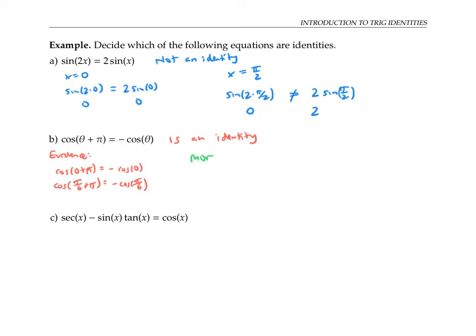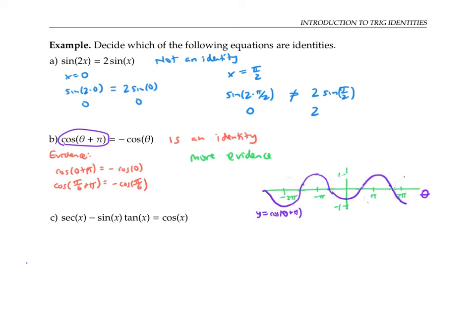We can build a little bit stronger evidence by looking at graphs. I'm going to put theta on the x axis. If I graph y equals cosine of theta plus pi, that's just like the graph of cosine shifted over to the left by pi. On the other hand, if I graph y equals negative cosine theta, that's the graph of cosine theta reflected across the x axis, which gives us the exact same graph. So graphing both sides gives us strong evidence that this equation is an identity. The strongest evidence of all would be an algebraic proof, which we'll do later in the course, once we have a formula for the cosine of a sum of two angles.